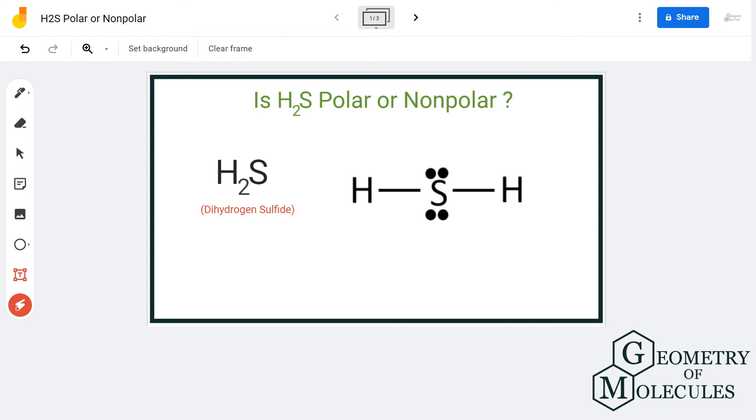Hi guys, in this video we are going to determine the polarity of H2S molecule, the chemical formula for dihydrogen sulfide. To determine its polarity we shall first look at its Lewis structure as well as molecular geometry.